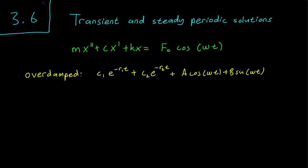If our system is overdamped, then we have a solution of this form: C1·e^(−R1·t) + C2·e^(−R2·t) plus A·cosine(ωt) plus B·sine(ωt). The thing to notice here is